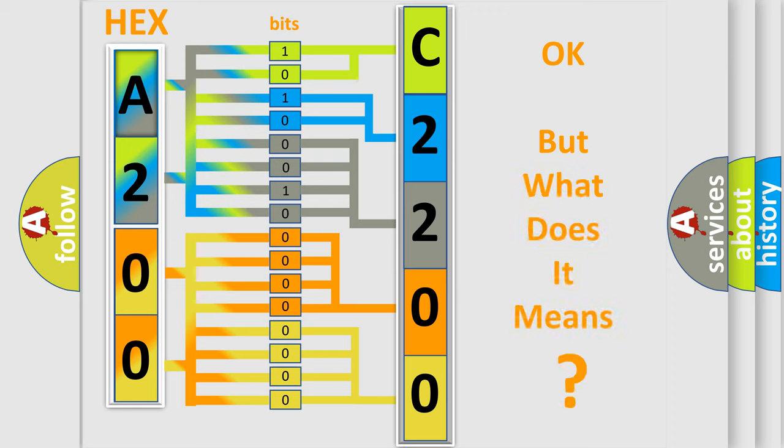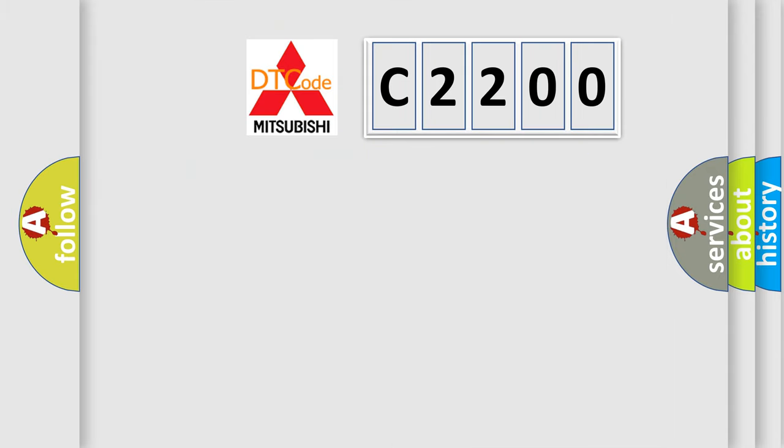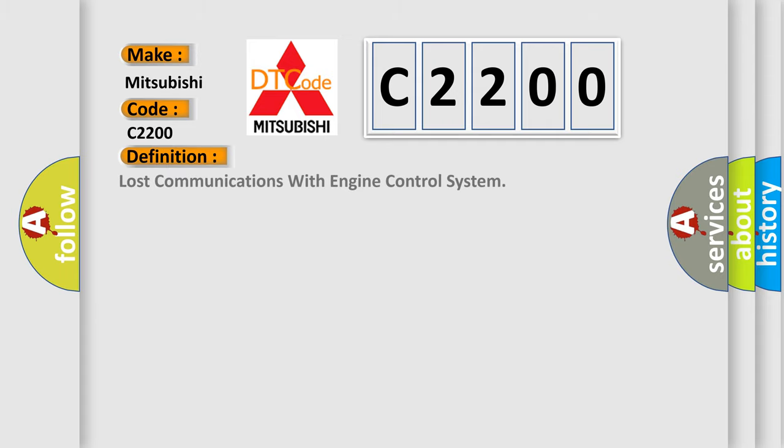The number itself does not make sense to us if we cannot assign information about it to what it actually expresses. So, what does the diagnostic trouble code C2200 interpret specifically for Mitsubishi car manufacturers?